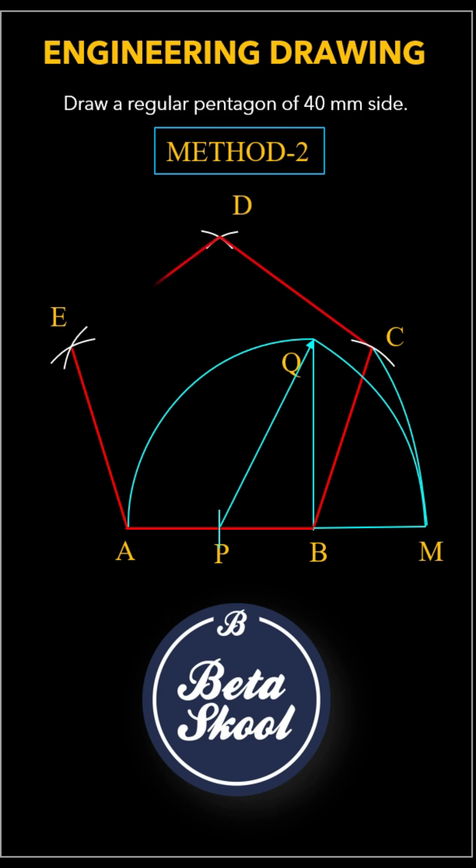Finally, join the points C, D, and E in order. You now have a perfectly constructed regular pentagon, no protractor required.